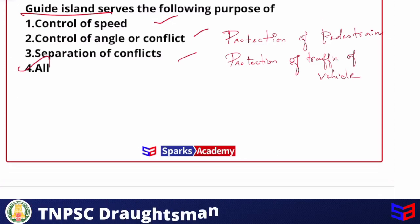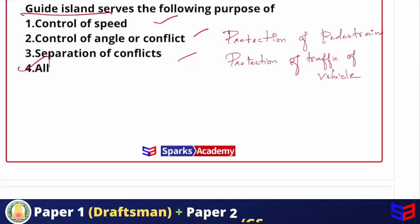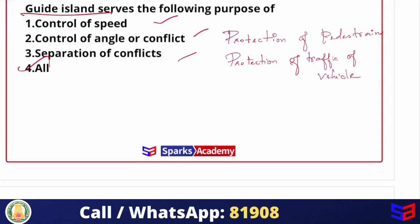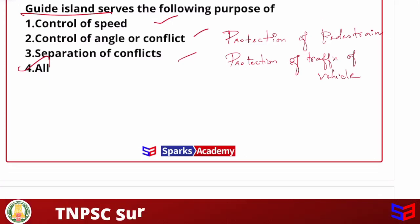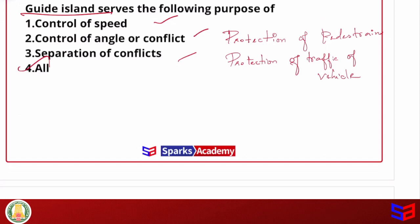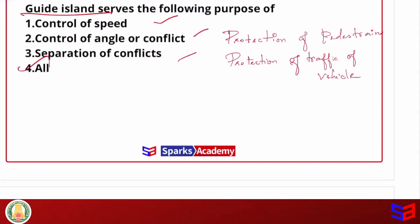The answer for the guide island question covers all the listed purposes. To recap, the Continuous Bay Method is a method of cement concrete road construction using a lane width of 4.5 meters. Stay tuned with Spox Academy for more videos. Thanks for watching.